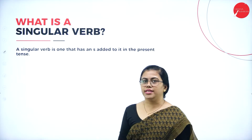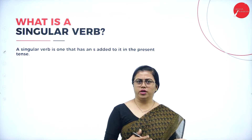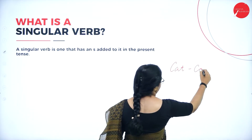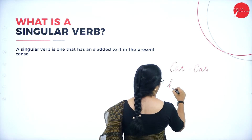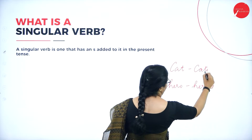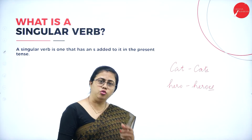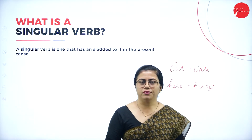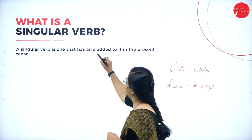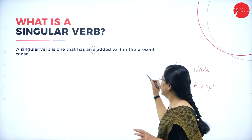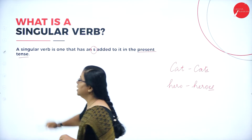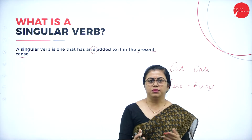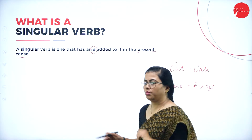Let us understand what a singular verb is. We know singular and plural nouns — like 'cat' and 'cats,' 'hero' and 'heroes.' You add 's' or 'es' to make nouns plural. But verbs also have singular and plural forms. A singular verb is one which has an 's' or 'es' added at the end, but only in the present tense. Whenever we add 's' or 'es' to a verb in the present tense, it becomes a singular verb.